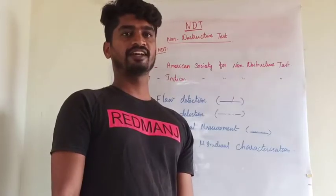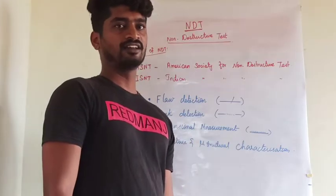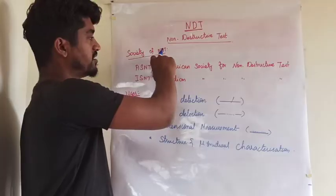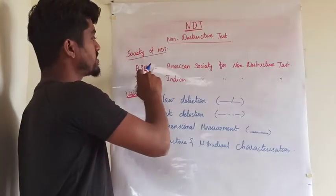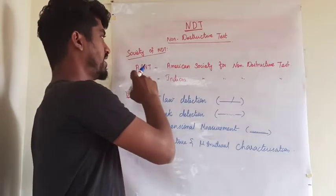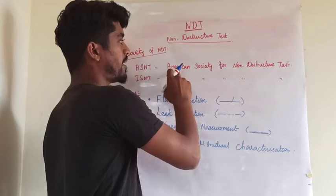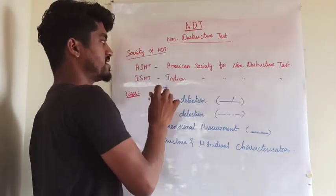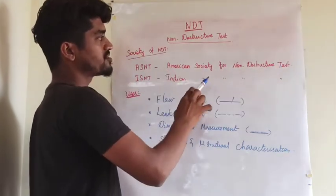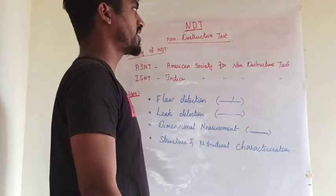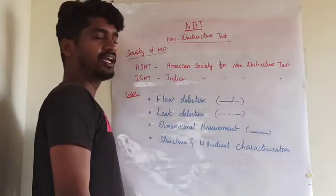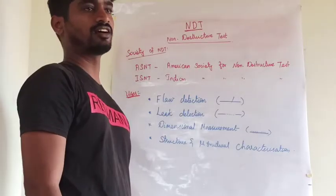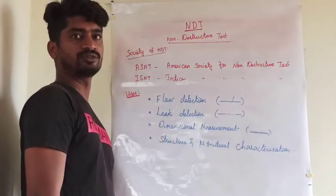When we are entering into NDT, we have to know the Society of NDT — ASNT and ISNT. ASNT stands for American Society for Non-Destructive Test and ISNT stands for Indian Society for Non-Destructive Test. We mainly use ASNT standards for non-destructive tests.